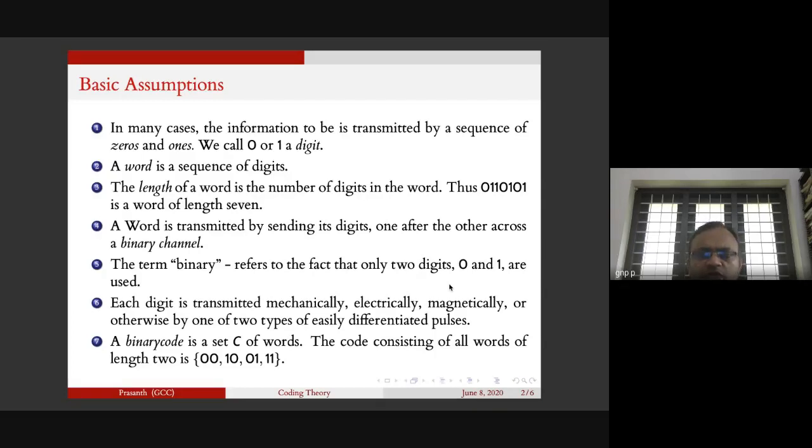A binary code C is a set of words. For example, the code consisting of all words of length two includes: 00, 10, 01, or 11.